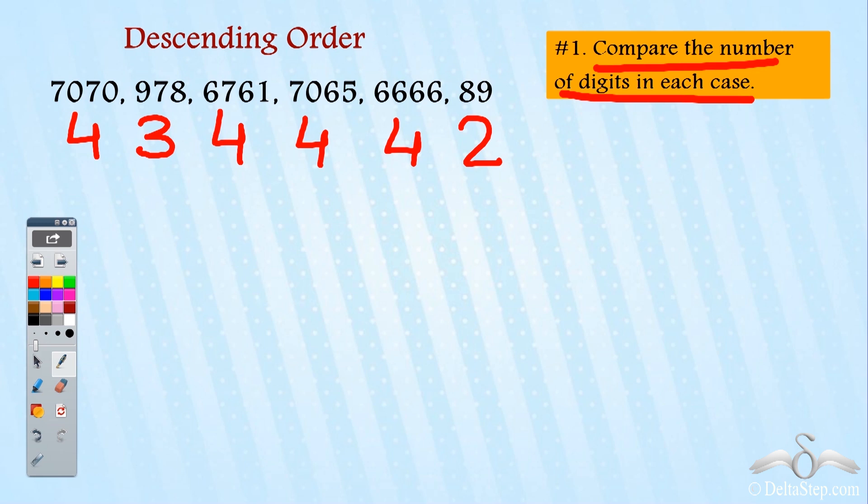Now I need to arrange these numbers in descending order, from the largest to the smallest. So the number with the largest number of digits will be greater than the number with lesser number of digits.